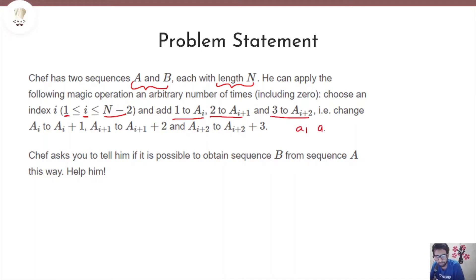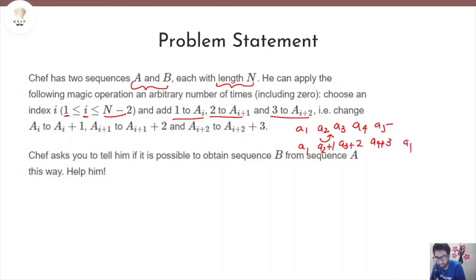For example, if the array has five elements and we pick the operation at index 2, then after performing the magic operation the new array will have A[2]+1, A[3]+2, A[4]+3, while A[1] and A[5] remain unchanged. So after performing the magic operation at selected index i, we add 1 to that index, 2 to the next, and 3 to the one after. Given two sequences A and B, we need to tell whether it is possible to get sequence B from sequence A after performing this magic operation.